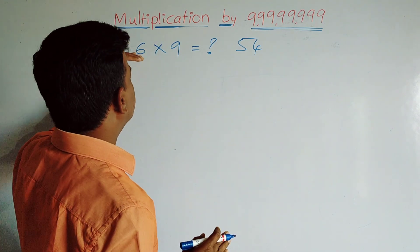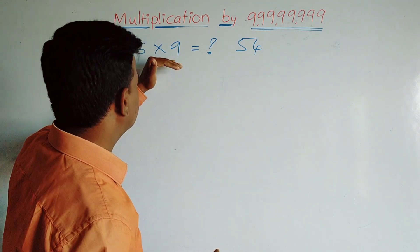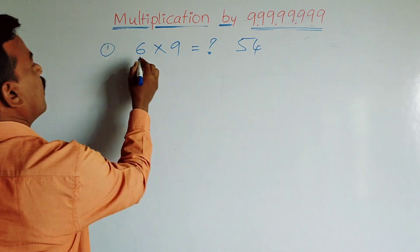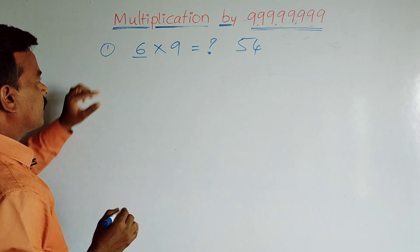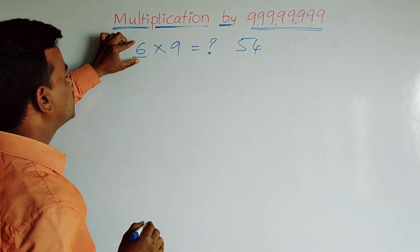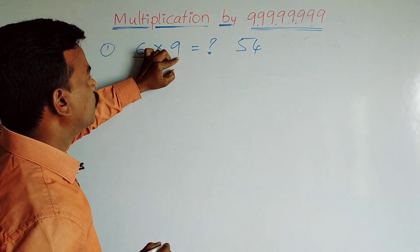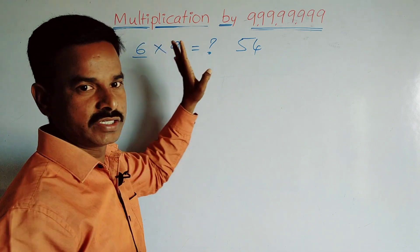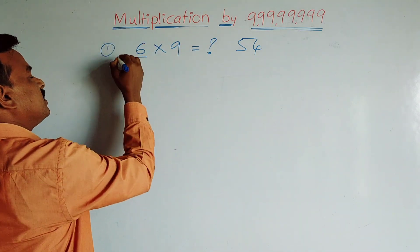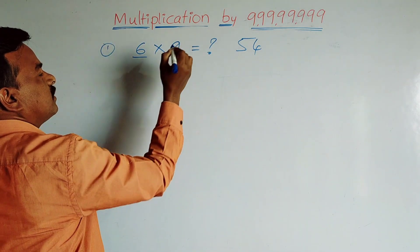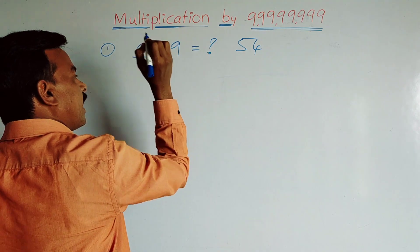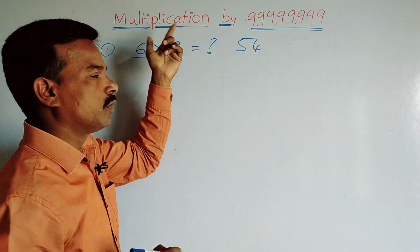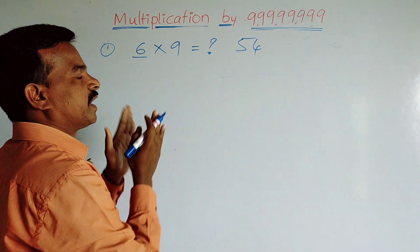First we have to examine whether this trick is applicable or not. How? Check if the number of digits in the multiplicand is equal to the number of digits in the multiplier. Yes — the number of digits in the multiplicand is 1, and the number of nines in the multiplier is also 1. So 1 equals 1, and we can apply this trick.